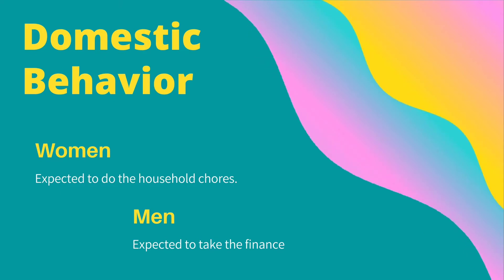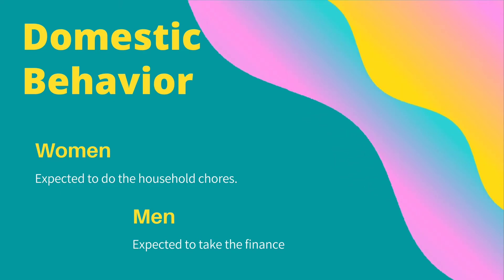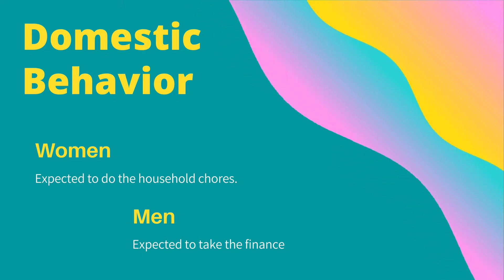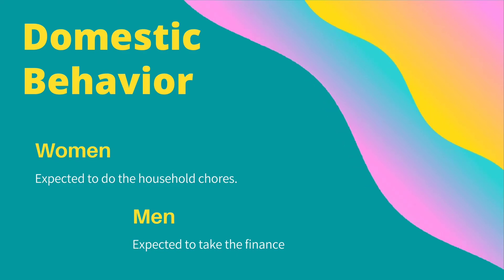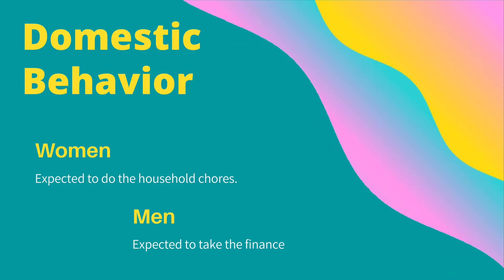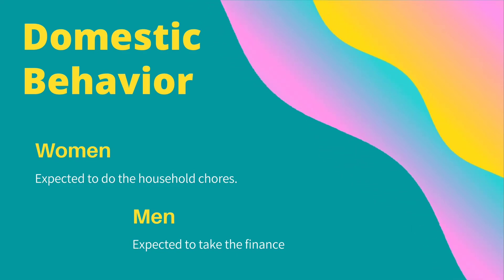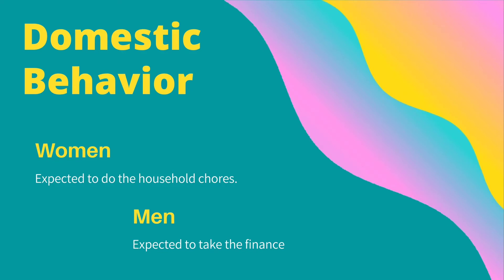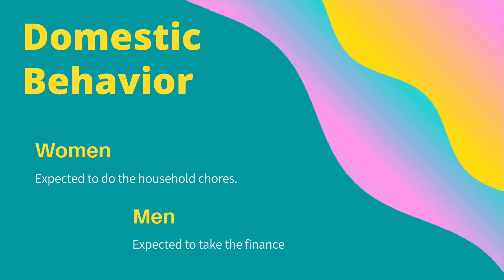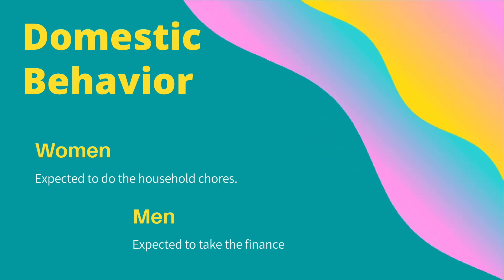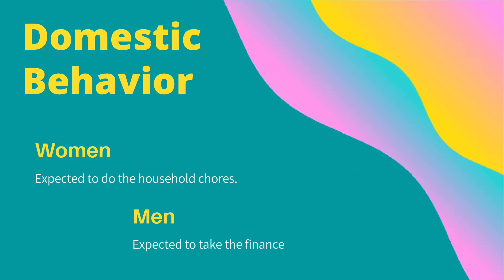The second one is domestic behaviors. For example, some people expect that women will take care of the children, cook, and clean the home, while men take care of finances, work on the car, and do the home repairs.